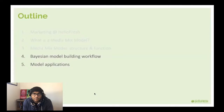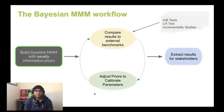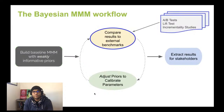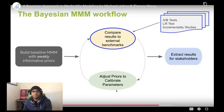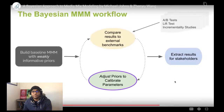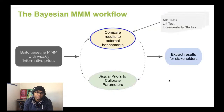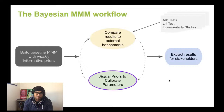A bit about our workflow: when building and maintaining the model, we start with a baseline model with weakly informative priors. We fit that model and compare the parameter estimates to external benchmarks from AB tests, lift tests, and incrementality tests. If we see good calibration we move on, but typically we need to adjust our priors — shifting them upward or downward, or narrowing them — to calibrate specific marketing channel estimates to our external benchmarks. We iterate through model fitting and comparison until the model is calibrated.